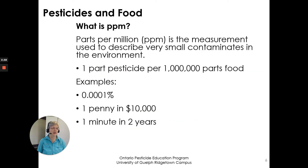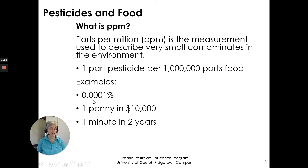Parts per million — how can we envision a part per million? One part pesticide per one million parts food. Examples are: in percentage, 0.0001%; a penny in $10,000; and one minute in two years. A very small amount.